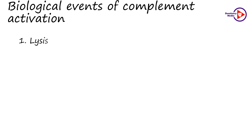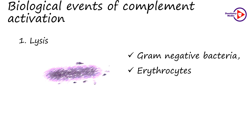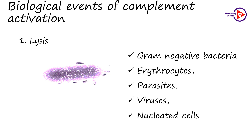The biological events of complement activation are as follows. The first is lysis, that is cytolysis or bacterial lysis. These complement proteins mediate immunological membrane damage through the insertion of the MAC complex, which disrupts the cell membrane thereby causing lysis. The MAC complex can lyse a broad spectrum of cells including gram-negative bacteria, and Neisseria species are highly susceptible to the MAC complex. Others include erythrocytes, parasites, viruses, and nucleated cells.